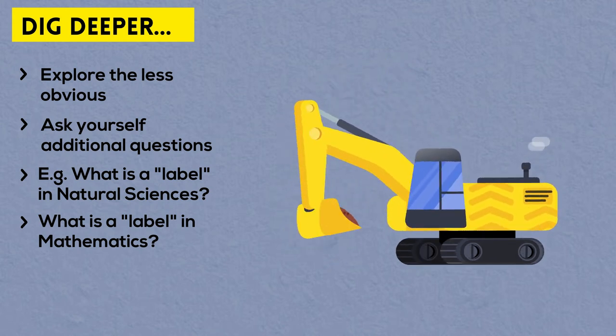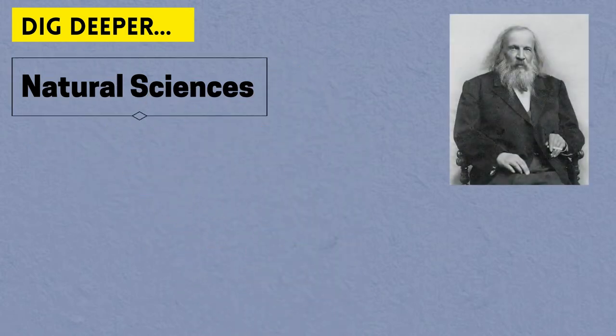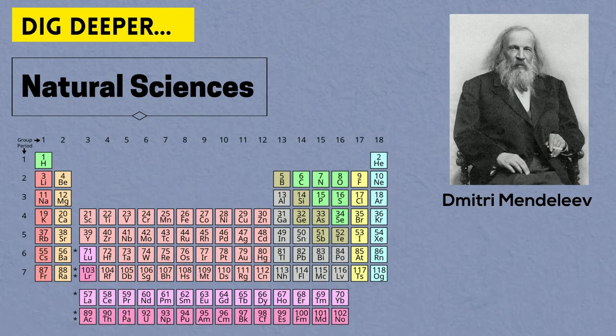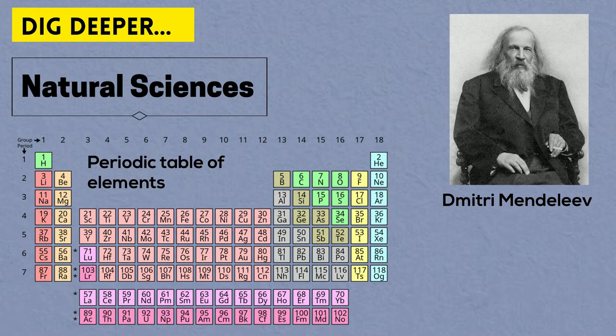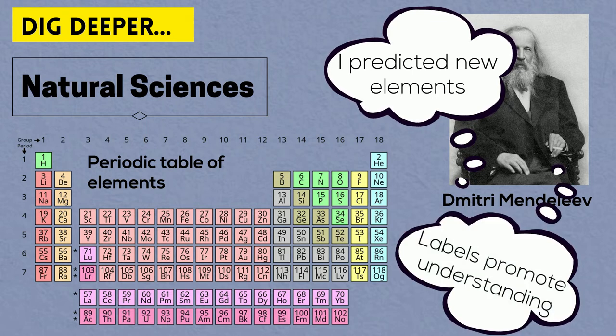For natural sciences, for example, you might start thinking about classification systems such as Mendeleev's periodic table of elements. Mendeleev labeled various elements depending on their atomic mass, and this allowed him to not only conveniently categorize them but to see patterns and predict the existence of new elements. Mendeleev will be a better example because it shows how labels can actually promote our understanding rather than constraining it.